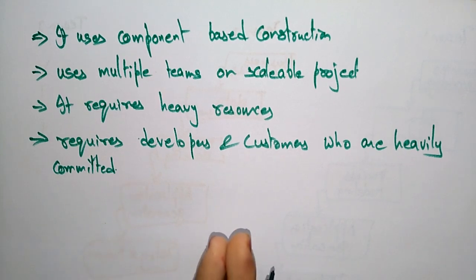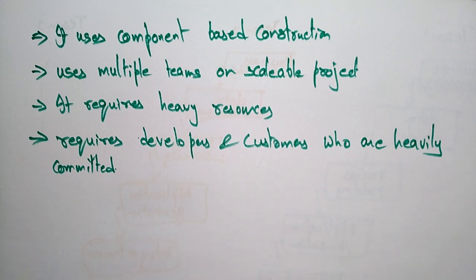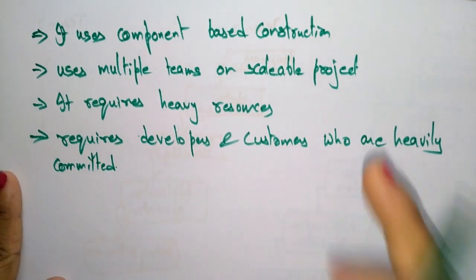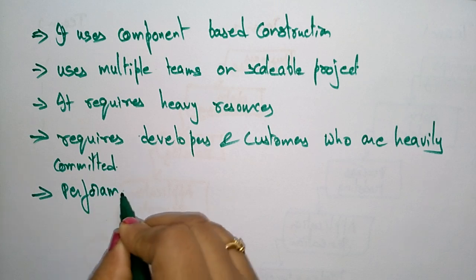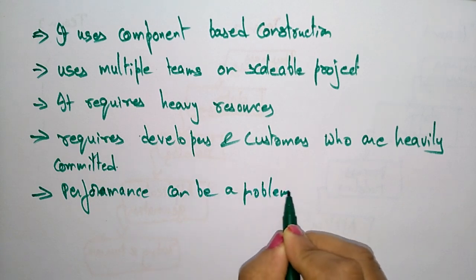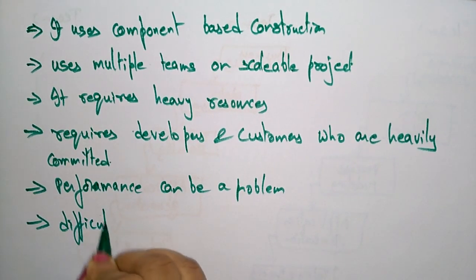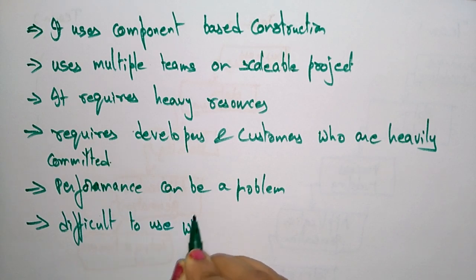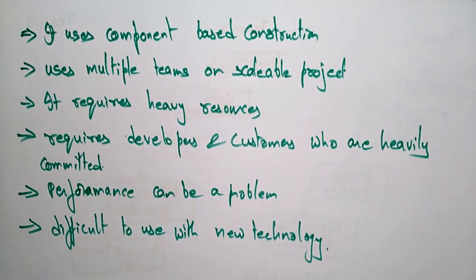There has to be a commitment between the customer and the developers. If a developer is working on a project using the RAD model, they have to be committed to that project only, so they can fully work on it and complete it within the given days. That person must be dedicated to that project only. Performance can be a problem with the RAD model, and it is also difficult to use with new technologies.